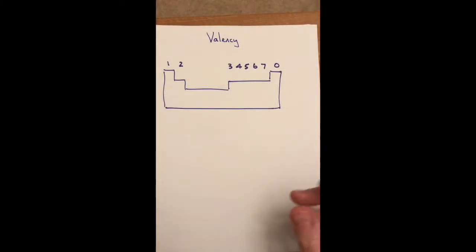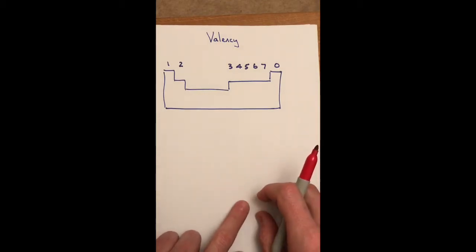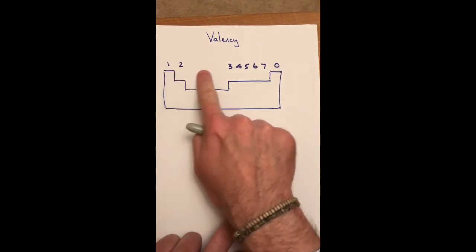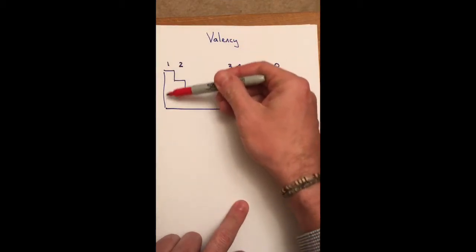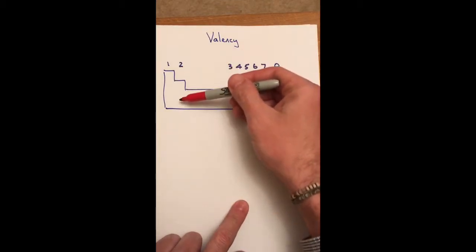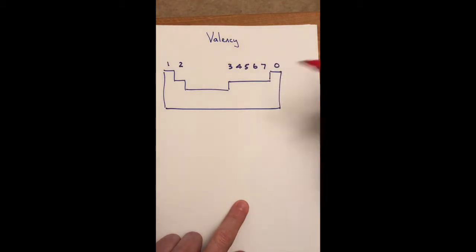This is a little video to show you how to use the periodic table in order to work out the formulas for compounds. When you get a periodic table in front of you, you would have the group numbers going across the periodic table here. So this is group one, group two, and so on.